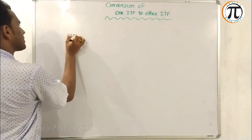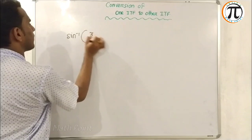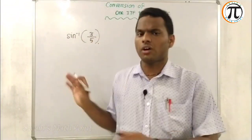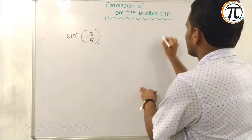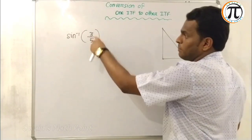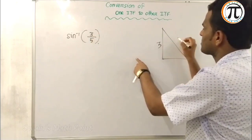Suppose I am taking an example: sine inverse 3 by 5. I want to convert into other formats. So what to do? We need to draw a right angle. This is P by H. P means 3, H means 5.